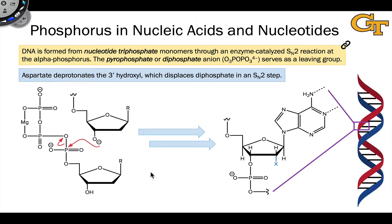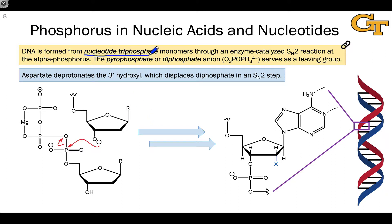Let's take a look at the formation of the polymeric DNA or RNA backbone in more detail, focusing on DNA. DNA is formed from the nucleotide triphosphate, which is similar to the nucleotide we saw in the last slide, but now we have a triphosphate group instead of a monophosphate group.